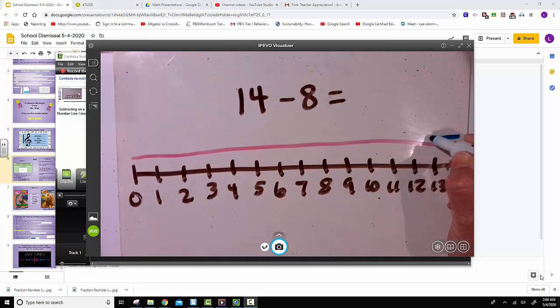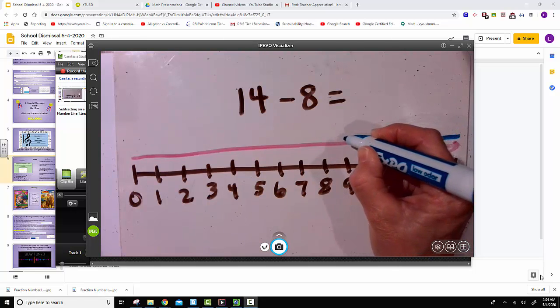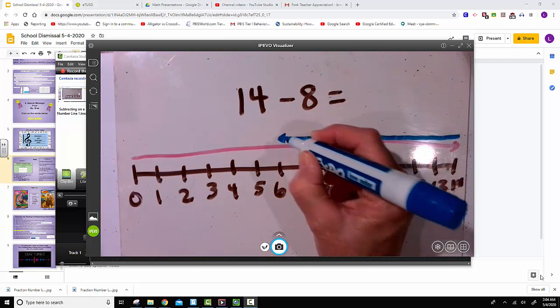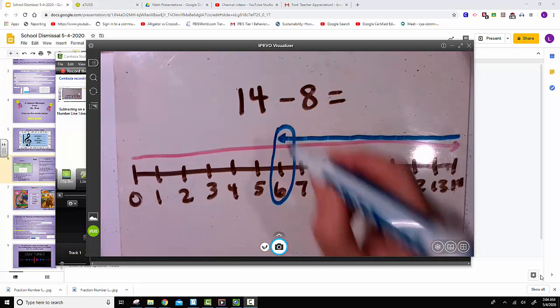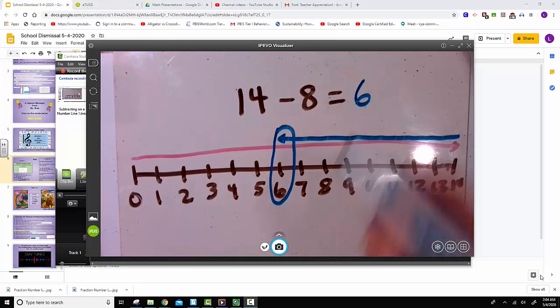So 1, 2, 3, 4, 5, 6, 7, 8. We find that the difference of 14 minus 8 is 6. So again I suggest you use two different colored pencils in order to show your work of subtracting numbers on a number line.